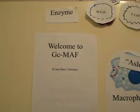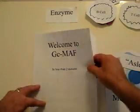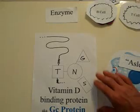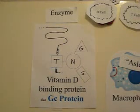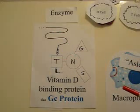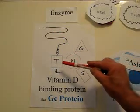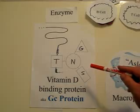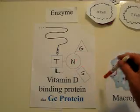Welcome to GCMoth. This is the vitamin D binding protein, also known as GC protein. It's a large molecule. We're going to focus on one amino acid, and attached to this amino acid are three sugars, designated G, N, and S.